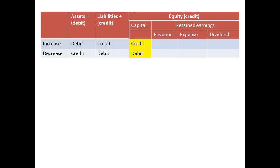There are different groups of accounts under equity. The capital account is increased by a credit to the account. It is decreased by a debit to the account. To increase a revenue account we debit the account. To decrease a revenue account we debit the account.